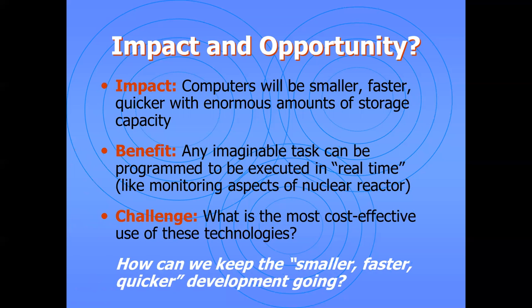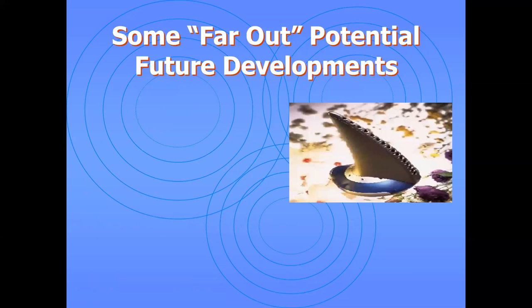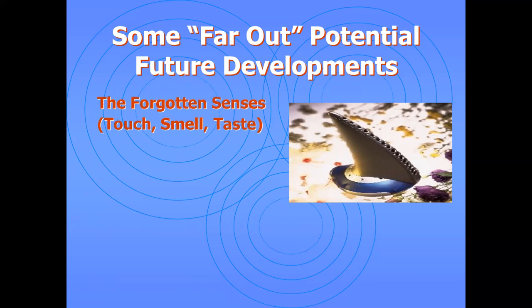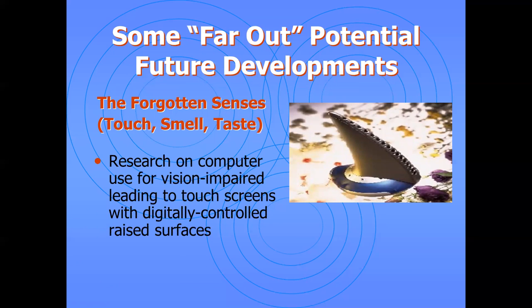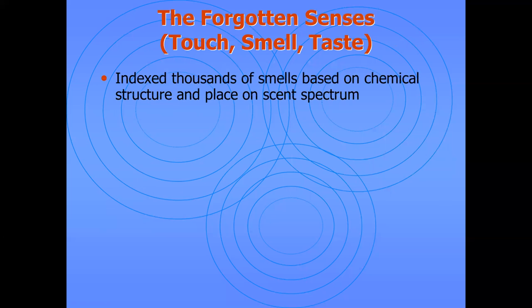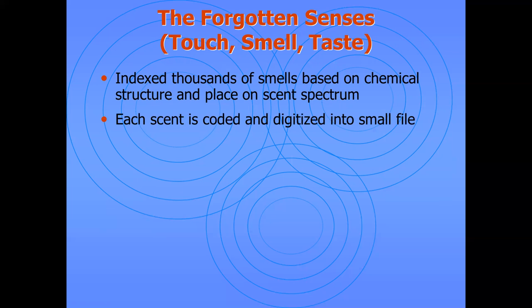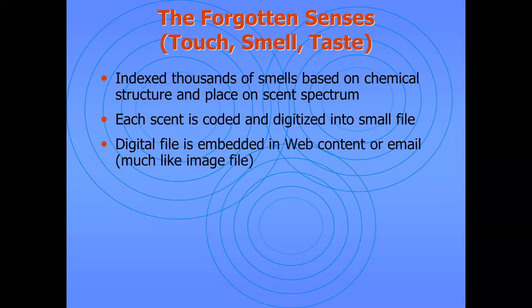The key question is: how can we keep the smaller, faster, quicker development going? Some far-out potential future developments include the forgotten senses — touch, smell, and taste. Research in computing is also being used for the vision impaired, leading to touch screens with digitally controlled surface textures — a digital sense synthesizer.